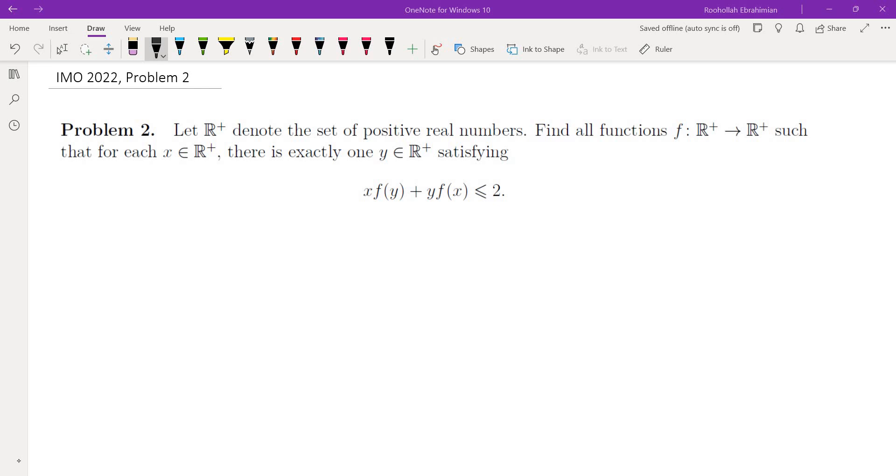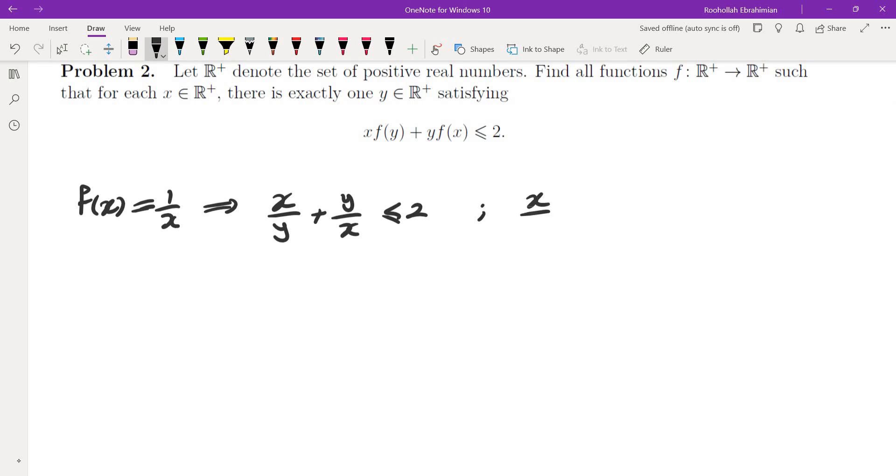And then immediately it became clear to me that if I take f(x), substitute that by 1 over x, I would get x over y plus y over x less than or equal to 2. But by AM-GM, I know x over y plus y over x is greater than or equal to 2, which means x over y plus y over x must be 2.